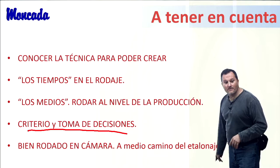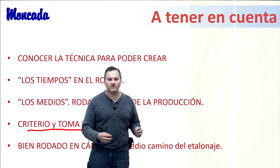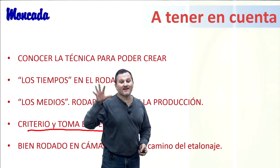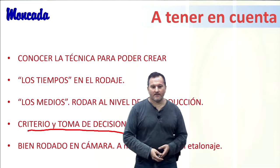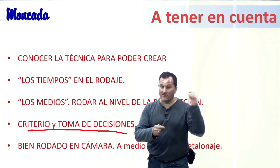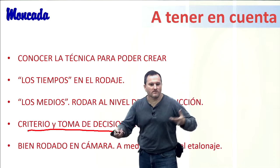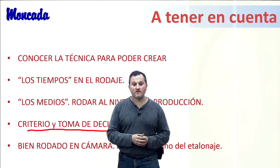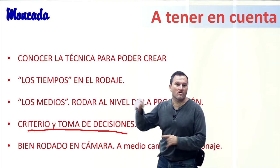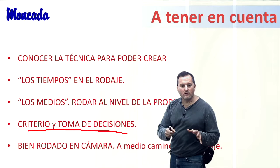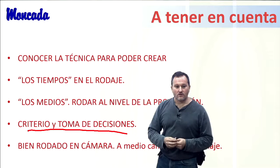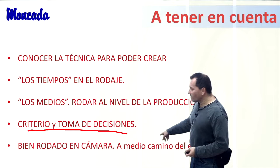Hoy día estamos con las curvas logarítmicas, rodar en RAW, el 4K… Hay que tener claro que si tienes un proceso de etalonaje al que puedes dedicarle tiempo, puedes dejarte cosas para luego, sabiendo que están dentro de un margen de corrección. Lo que no vale es cuando no voy a llegar a tiempo: en ese caso hay que intentar llevarlo más acabado en cámara, porque la cámara procesa a más bits que cuando luego estamos etalonando. Soy partidario de llevarlo a medio camino.